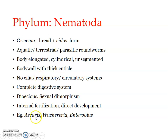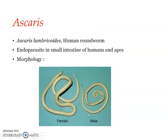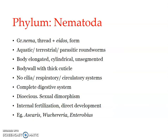A few examples are Ascaris, Wuchereria, and Enterobias — we will be learning about these in detail. These are parasitic forms. Nematoda can be parasitic to both plants and animals, or free-living — found in aquatic ecosystems as well as terrestrial ecosystems. These are the important characters of Phylum Nematoda, and the rest of the details of these species we will be learning in the coming videos.